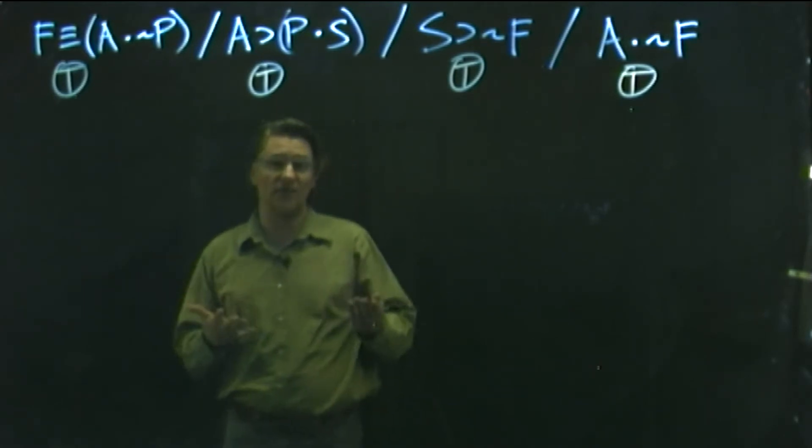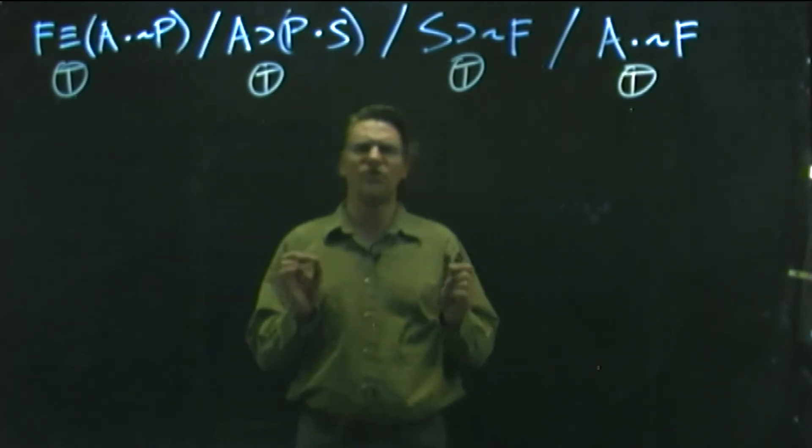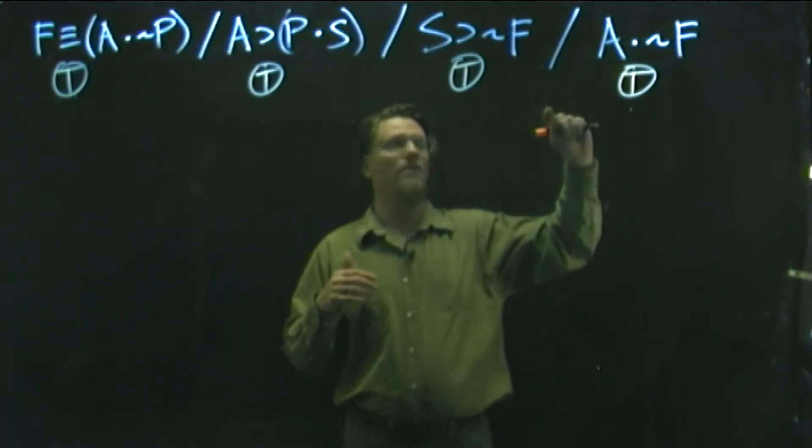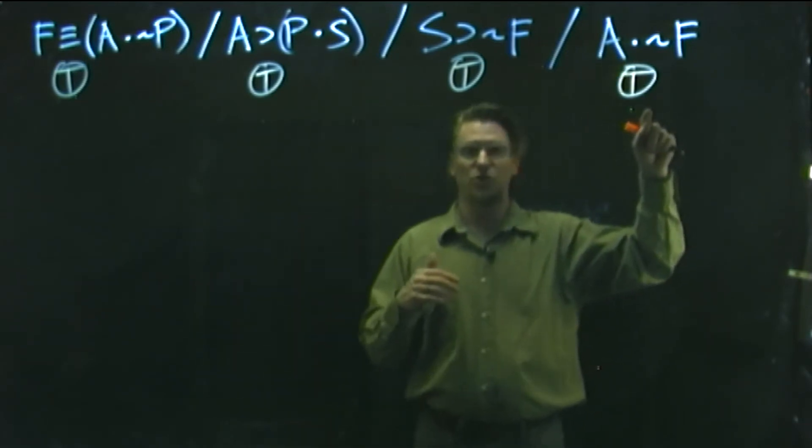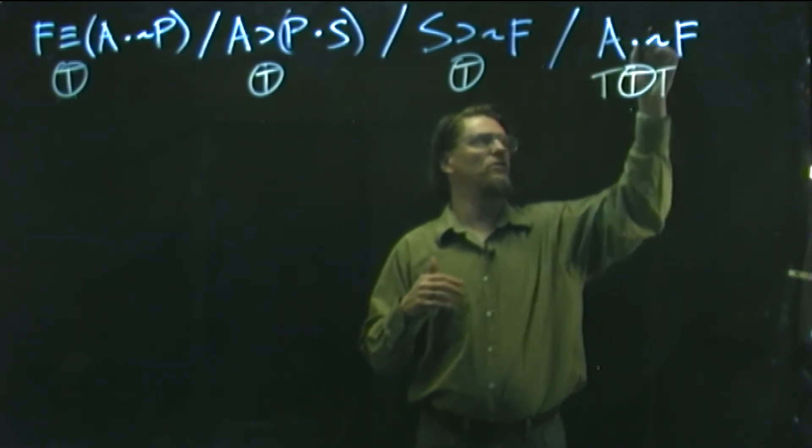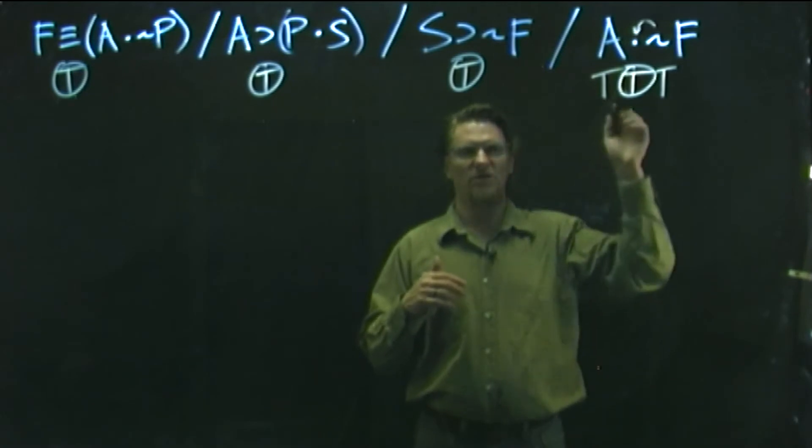And so then next, we want to start, as it says, start with the claim that has a dot as its main operator. So it's a very specific instruction there. And so, in fact, on this one, we are going to start with this last claim here and make it true. In other words, we're going to make A true, and the tilde is feeding in from the right. So it's going to be the tilde that's true, making the F false.